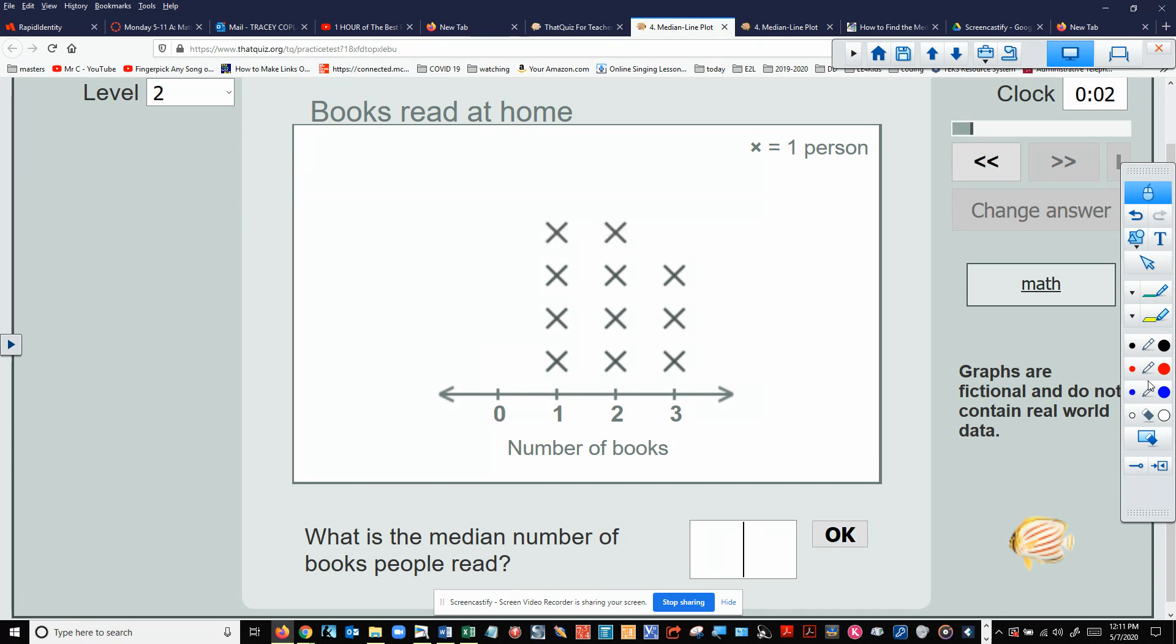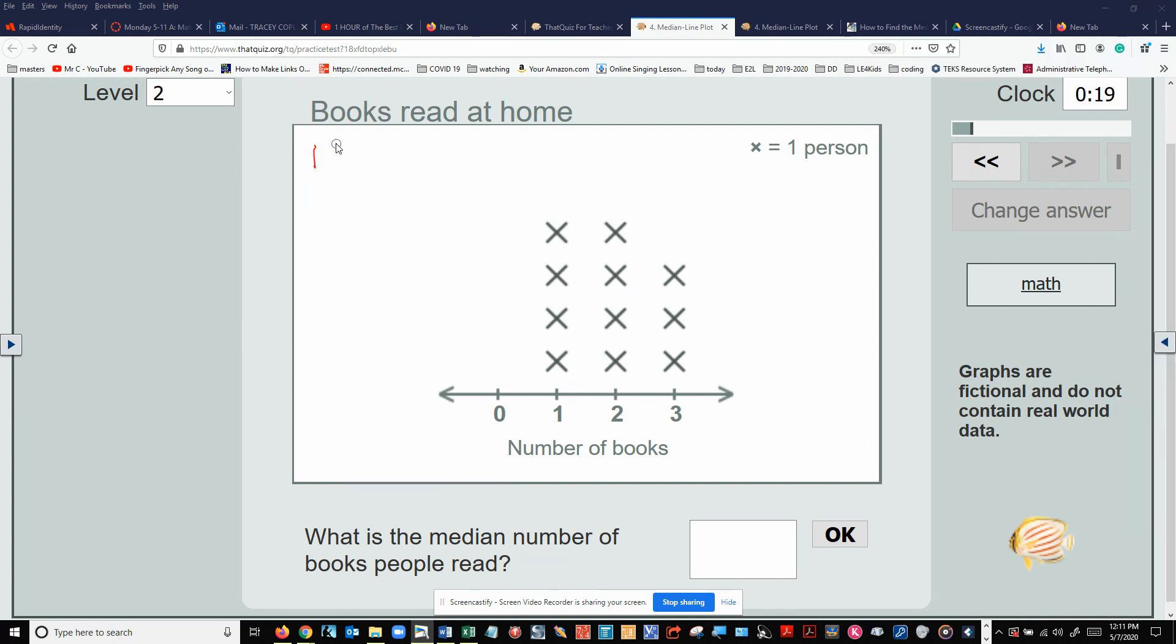Alright. On this one here, it is asking what is the median number of books people read? Again, it's the same thing. We didn't have any person read zero books. But we did have one, two, three, four people read one book.